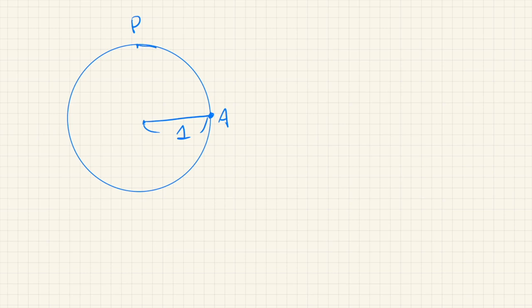can be measured by the distance from this point A. So let's say x. So this x, since this is a unit circle, this x corresponds to the angle between A and P. So this is x radians.